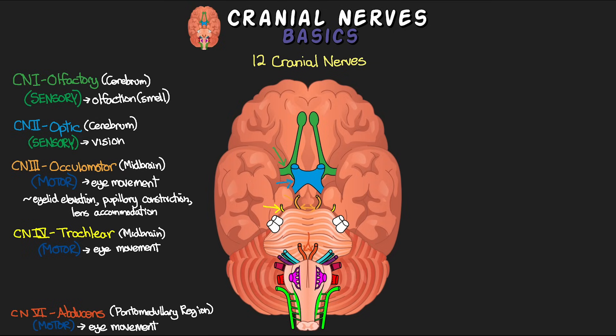I didn't go into depth on the specific types of eye movements each of these nerves controls — that will be covered in a future lesson. As a hint, cranial nerve six is called the abducens because it is in charge of abduction, moving the eye laterally to the outside.